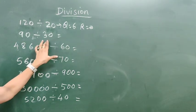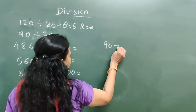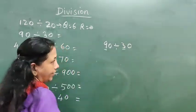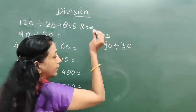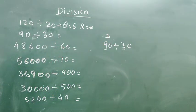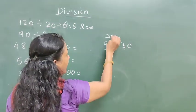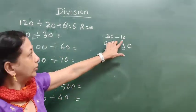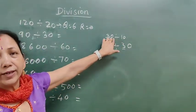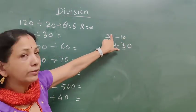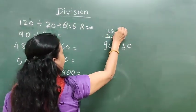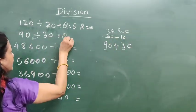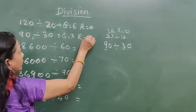Now the second example: 90 divided by 30. Here we have 3 and 9 — so 9 divided by 3 gives 3. Then there is one remaining 0 in 90 and one 0 in 30. Remove matching 0s, and 1 zero from the divisor means 1 place is remainder. So quotient is 3, remainder is 0.